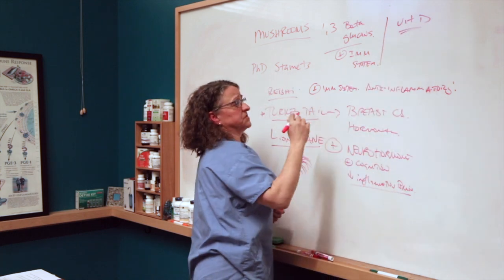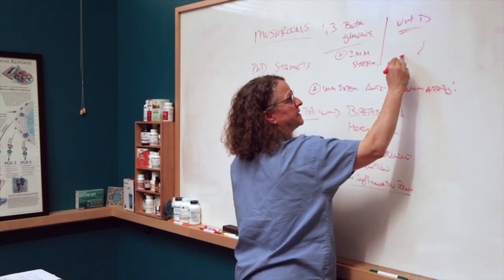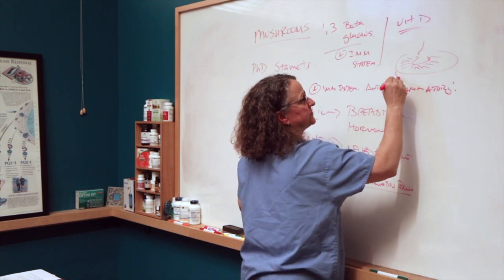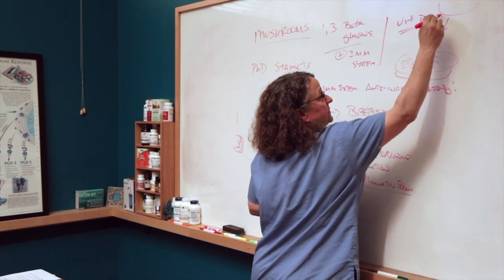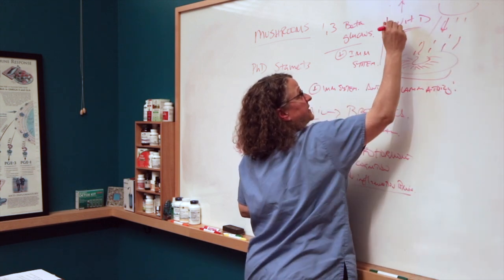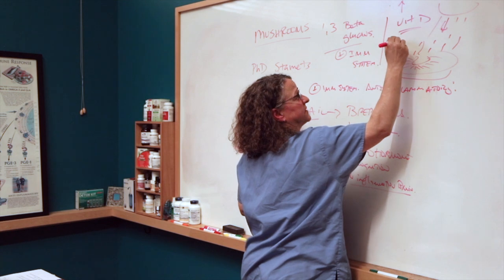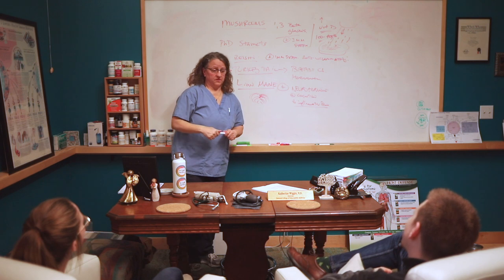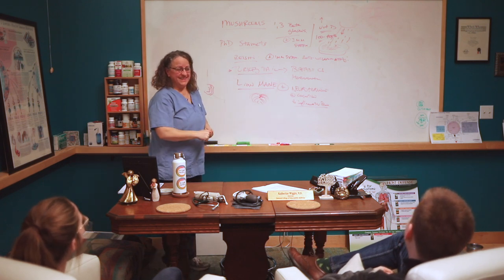If you took a portobello mushroom and you put it upside down in the sun, it increases the vitamin D content anywhere from 100 to 400%. This is research that Dr. Russell Mars is working on in Portland, Oregon.